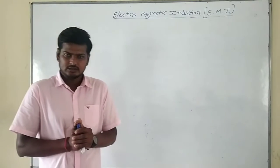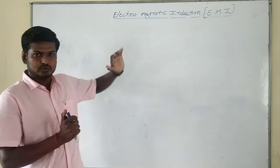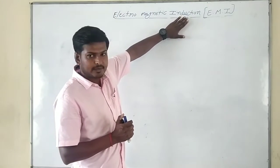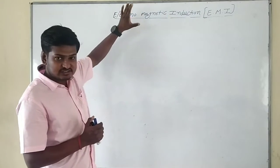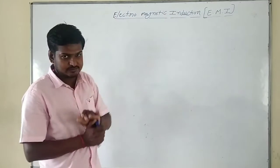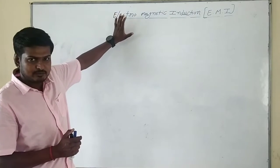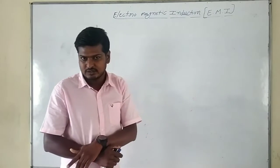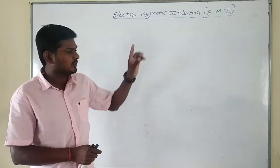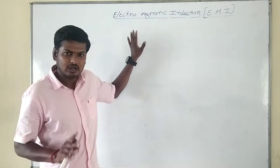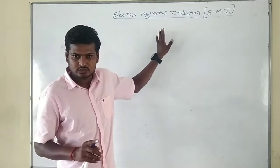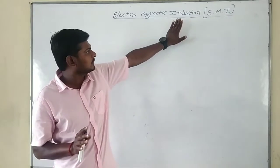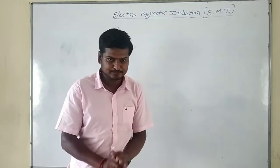Hi students, welcome to my channel. Today I am going to take into one of the important chapters in your second year, that is electromagnetic induction. This is the 6th chapter in your syllabus. Maximum 8 hours is allotted from the PU board, and in your final exam the maximum weightage will be 6 marks. There will be one 5-marks question and one 1-mark question, or one 3-marks question, one 2-mark question, and one 1-mark question. So the total maximum weightage for this chapter is 6 marks.